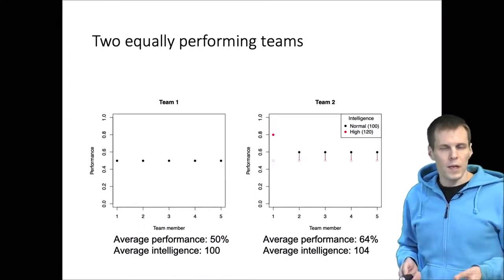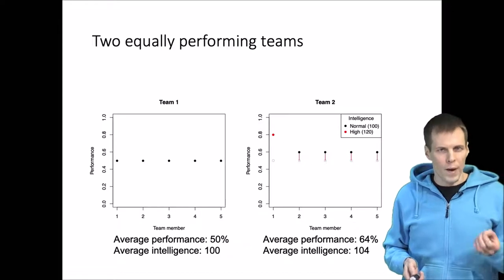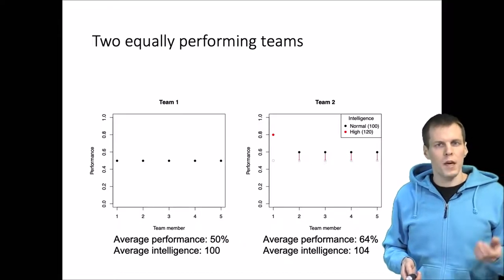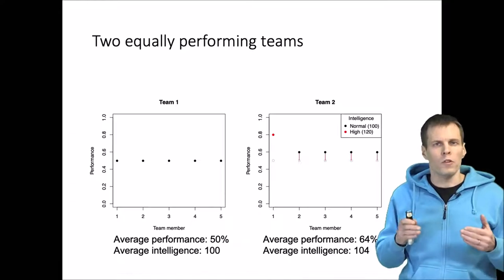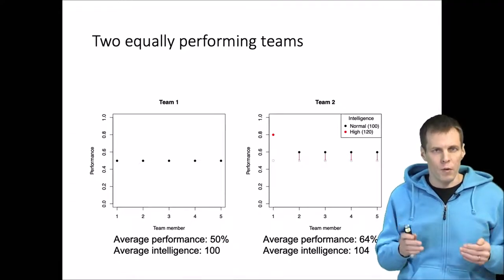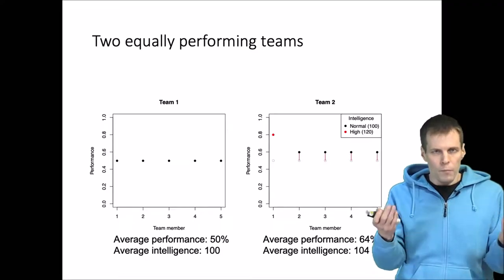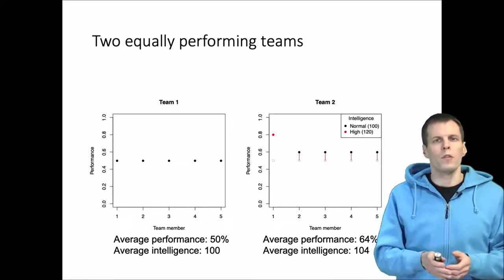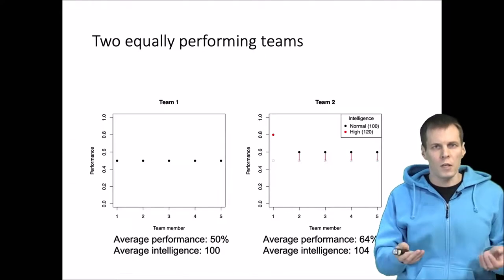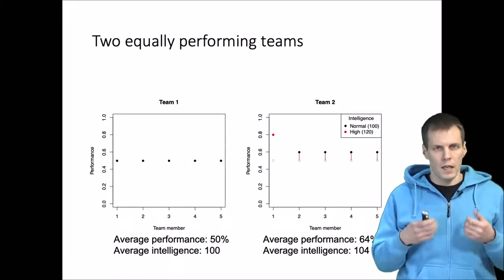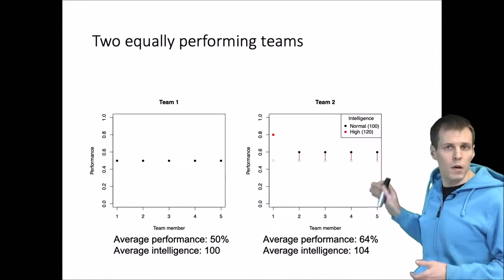This happens. We can see that the smart person works better — his or her performance is better than the average people — but also the performance of the average people increased when the smart person came to the team. For example, this kind of effect would happen if the smart person can provide leadership for the team, and that leadership will make the other people in the team work better.